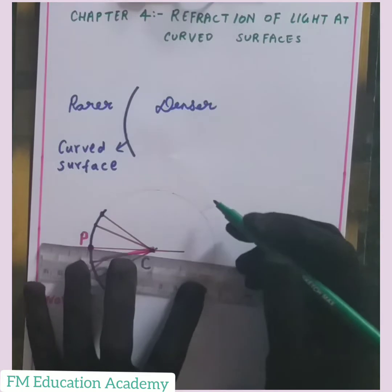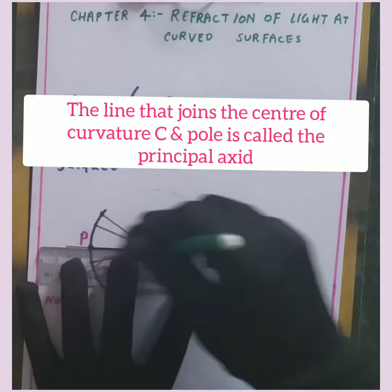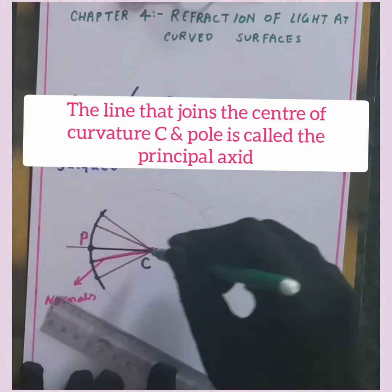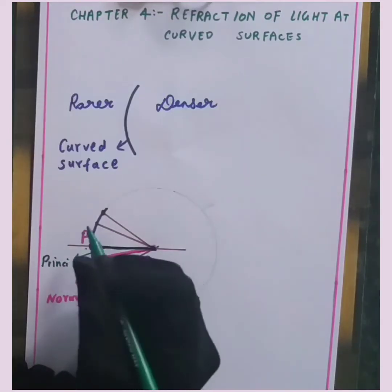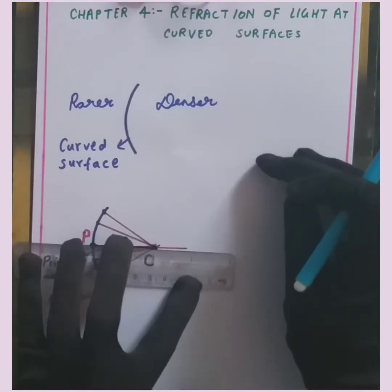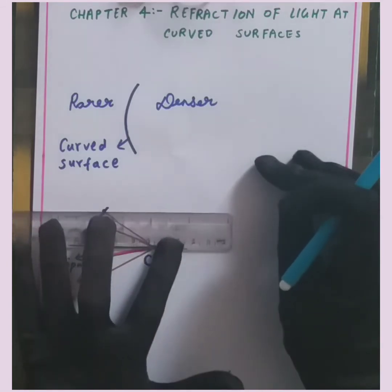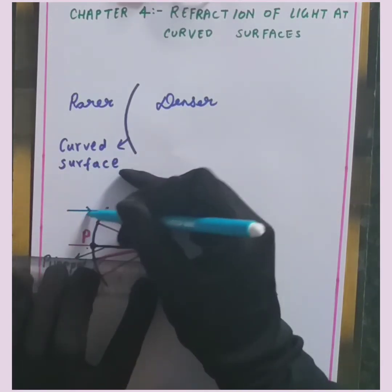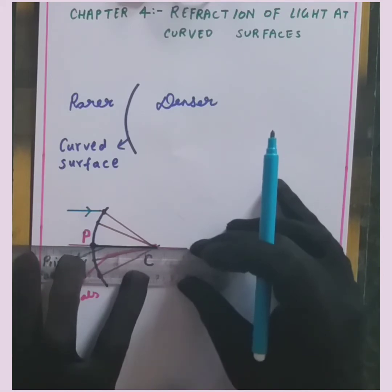The line that joins the center of curvature and the pole is called the principal axis. So here PC is the line joining the center of curvature and the pole. The direction of light rays — let us suppose they are traveling parallel to the principal axis. Directions are important in lenses and mirrors; you should always indicate them with arrows.